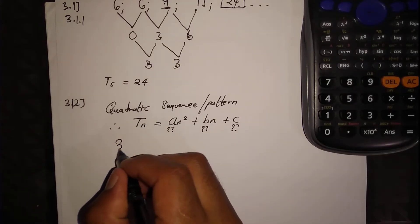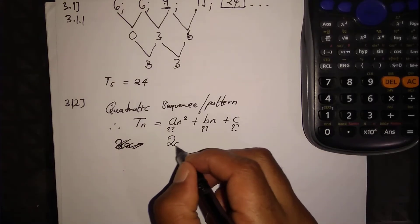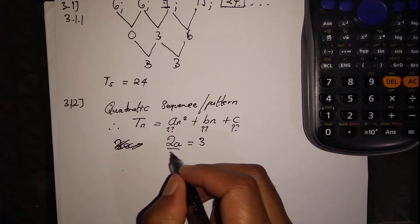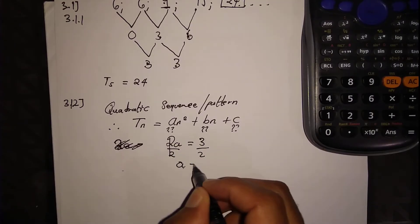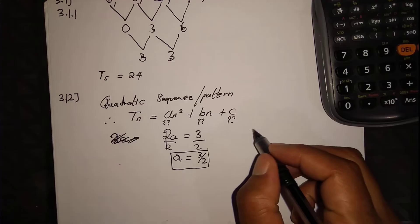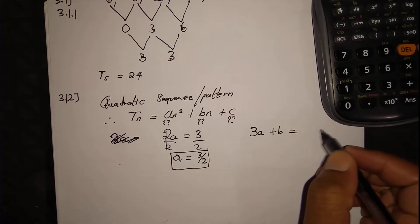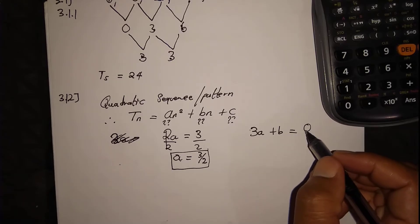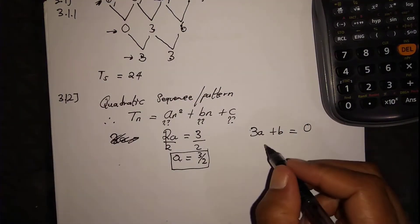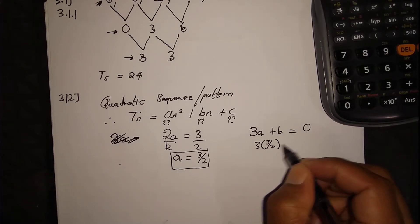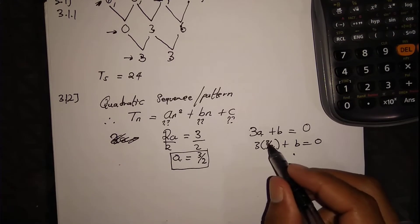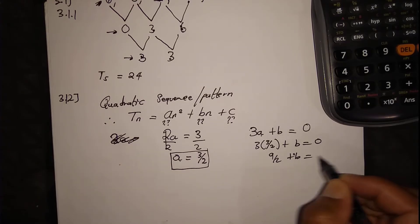So 2A equals the second difference, which is 3 in this case. Divide by 2: A equals 3 divided by 2. Now for B: 3A plus B equals zero. A is 3 over 2, so 3 times 3 over 2 equals 9 over 2. Plus B equals zero.